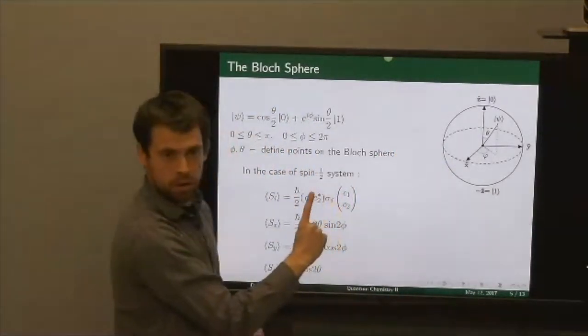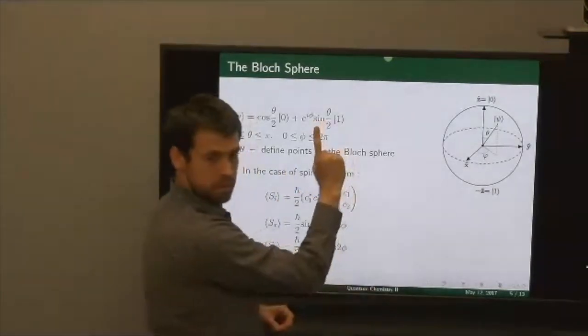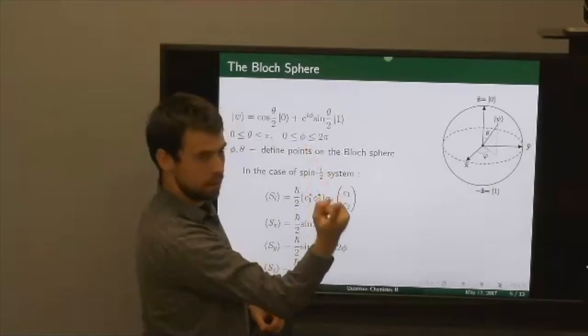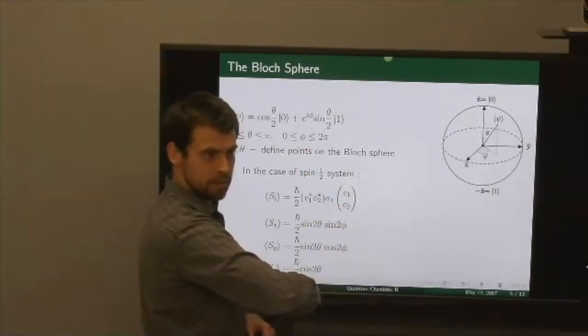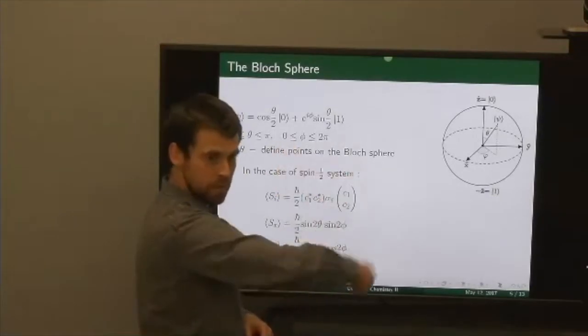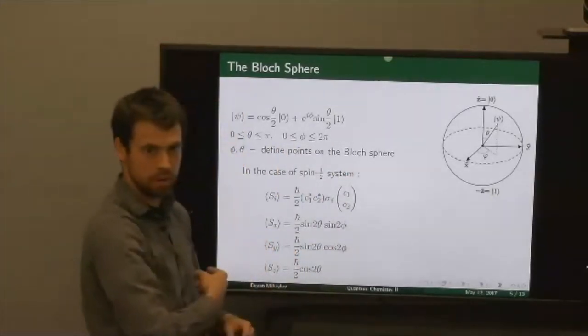So if your total vector points along the z-axis exactly, then you're in the ground state. As you move away from the z-axis, the more perpendicular you are to the z-axis, the more you are into the excited state.